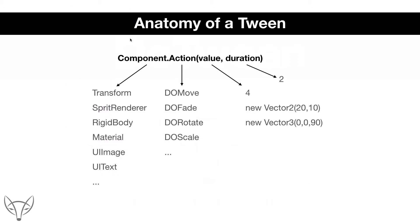Let's take a look at the anatomy of a tween. A tween is an animation that DoTween can generate. A tween consists of a component, an action, a value, and a duration. The component is often a component of a game object, like transform, sprite renderer, rigidbody, material, and so on.